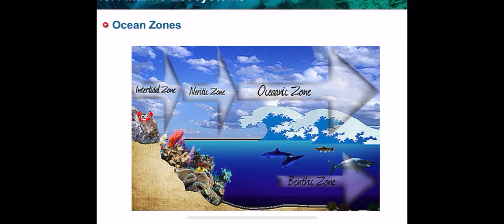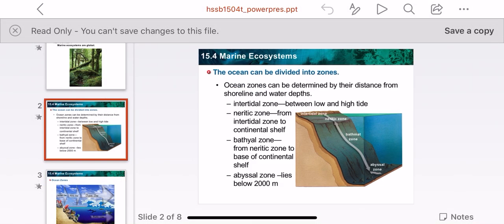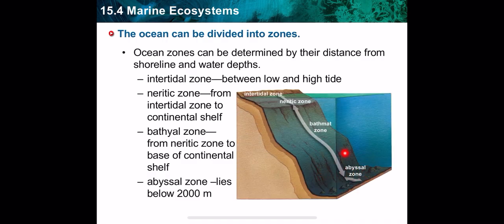Going deeper, we reach the abyssal zone, which starts from 2000 meters down to the ocean floor. It is the darkest zone, so organisms must be adapted to darkness and living without sunlight. Producers here use chemicals from volcanic vents to produce their own food through chemosynthesis. Creatures like the anglerfish communicate and attract prey by producing bioluminescence — they glow in the dark.